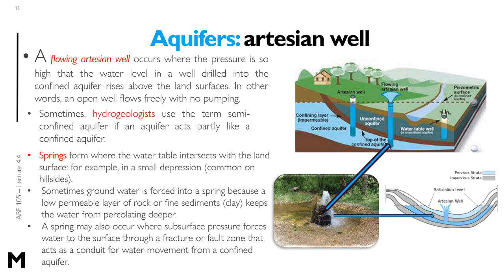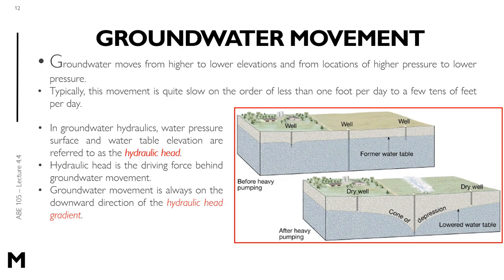Groundwater moves from higher to lower elevations and from locations of higher pressure to lower pressure. Typically this movement is quite slow — on the order of less than one foot per day to a few tenths of feet per day. In groundwater hydraulics, water pressure, surface, and water table elevations are referred to as the hydraulic head. The hydraulic head is the driving force behind groundwater movement. Groundwater movement is always in the downward direction of the hydraulic head.